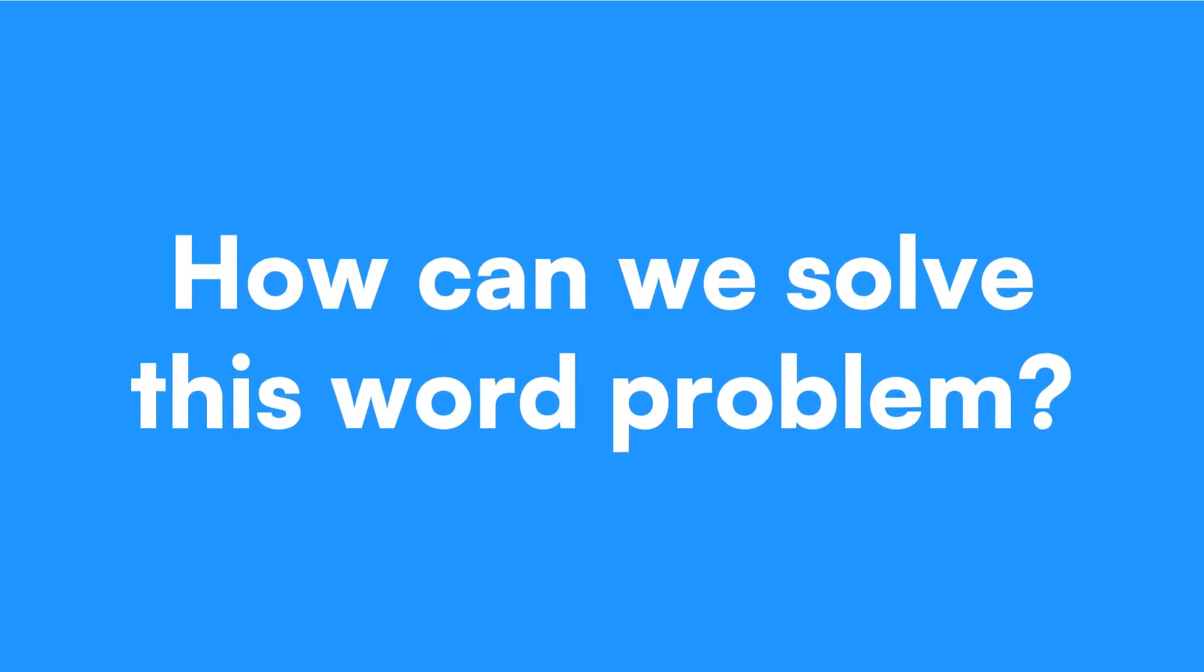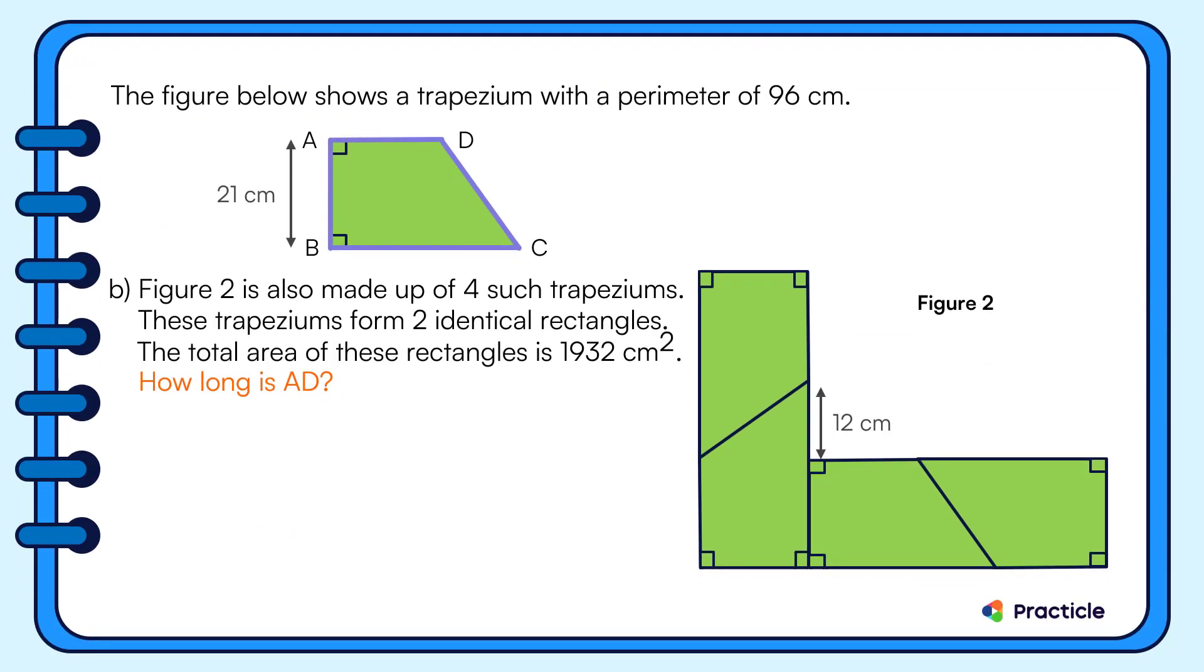Wow, it looks like our trapezium can really form many figures. Let's think about what we know. We know the total area of the two rectangles. Let's try to simplify this problem by working with the area of only one rectangle. And I'm sure all of you know how to do that.